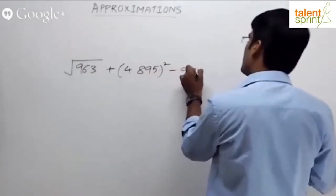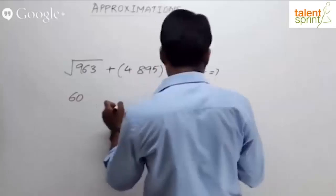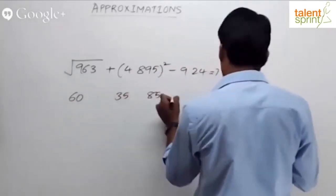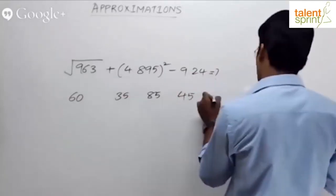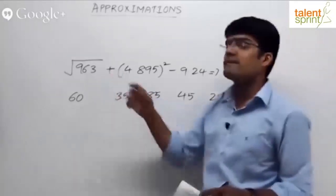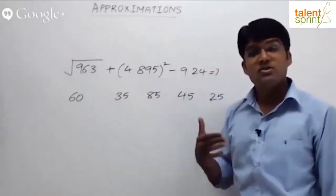The options are 60, 35, 85, 45, and 25. What is the square root of 963? Square root of 900 is 30, square root of 961 is 31. Yes or no? 31 squared is 961, so very close to 31.